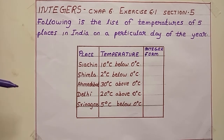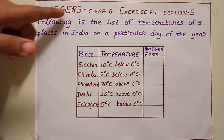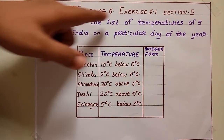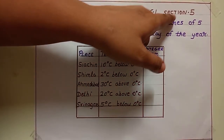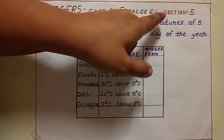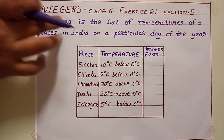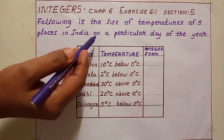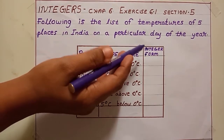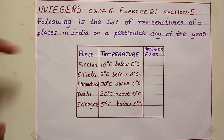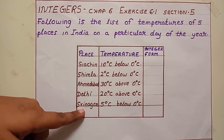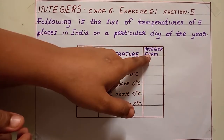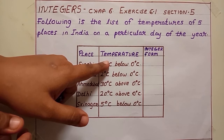Hi kids, in the previous classes we were dealing with integers chapter 6 and exercise 6.1. Today we are going to do exercise 6.1, section 5. Following is the list of temperatures of 5 places in India on a particular day of the year. We want to find places given in a chart and their temperature, then we want to find the integer form of this temperature.